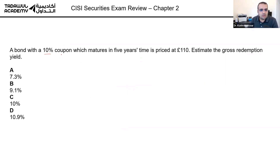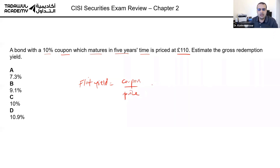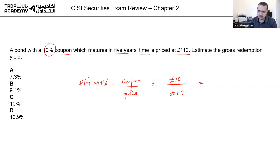A bond with a 10 percent coupon matures in five years time and is priced at 110. Estimate the gross redemption yield. The gross redemption yield, or yield to maturity, is the annual yield plus any capital gain or loss on redemption. Start by calculating the flat yield, which is just the coupon over the price: 10 pounds over 110, giving a flat yield of 9.1 percent.